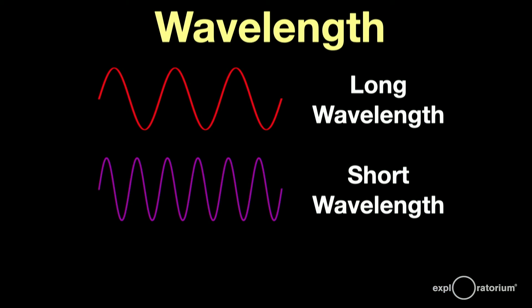If the wave vibrates slowly, the peaks and troughs of the wave are further apart. Vibrating quickly brings the peaks and troughs closer together.